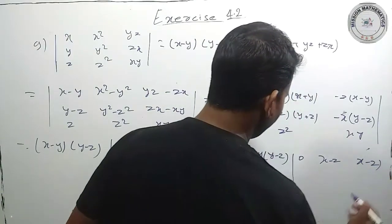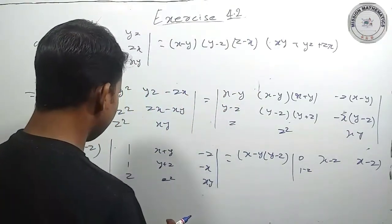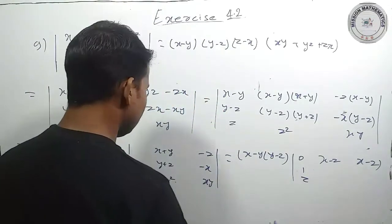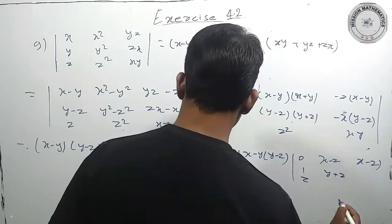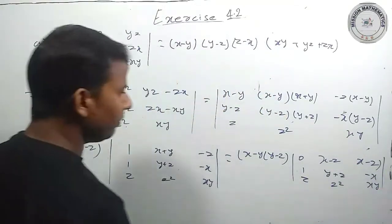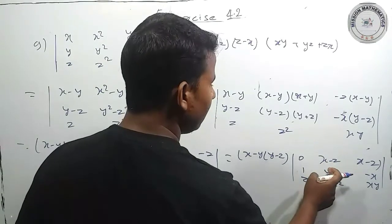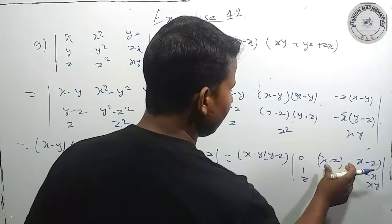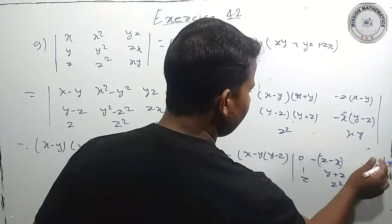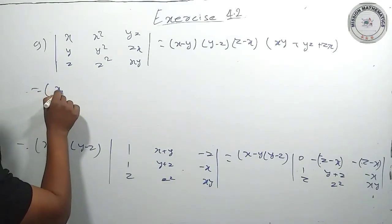तो x minus z लिख दिया। और फिर यहां से x minus z common करेंगे। और फिर 1 minus z (1−z) आ जाएगा। This y plus z and this x. Just simply minus common करेंगे तो minus of z minus x, यहां भी minus of z minus x हो जाएगा।